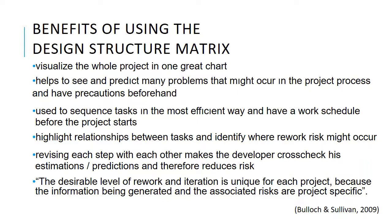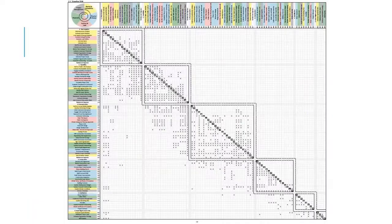According to Bullock and Sullivan, the desirable level of rework and iteration is unique for each project because the information being generated and the associated risks are project-specific. We will focus only on the construction phase. This is the full chart that the original design structure matrix was built on — you can pause the video to take a closer look.